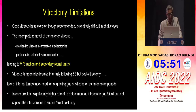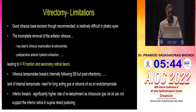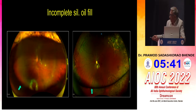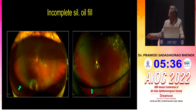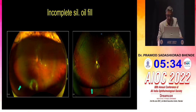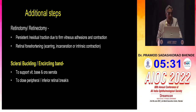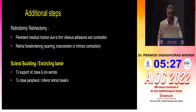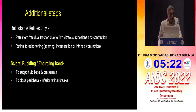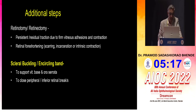Inferior breaks have a significantly higher rate of re-detachment, because neither gas nor oil adequately supports these areas. As you see in this case, there is a level of the silicone oil and you have a break inferiorly. So we consider additional steps: retinotomy or relaxing retinotomy when you have persistent residual traction due to firm vitreous adhesion and contraction, retinal foreshortening, or alternatively scleral buckling or an encircling band to support the vitreous base and ora serrata, and to close peripheral or inferior retinal breaks.